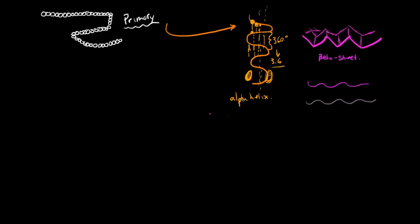The next level above secondary structure is called tertiary structure, which describes the conformation of the entire polypeptide.